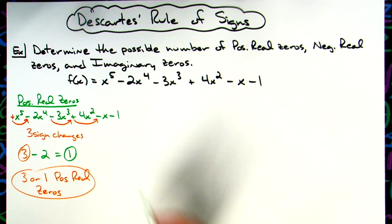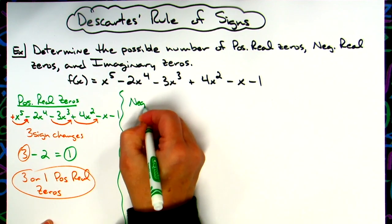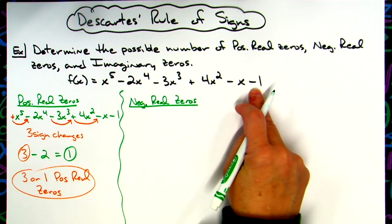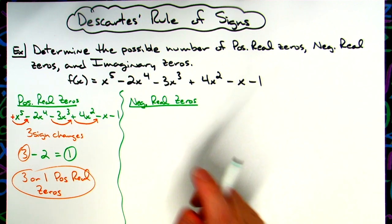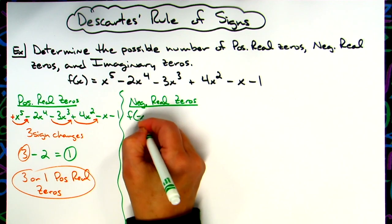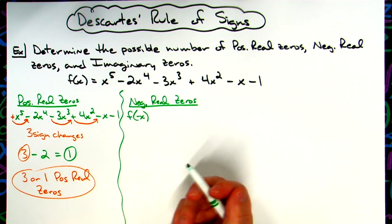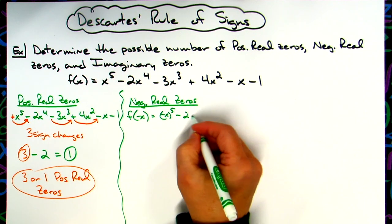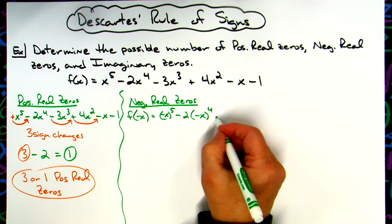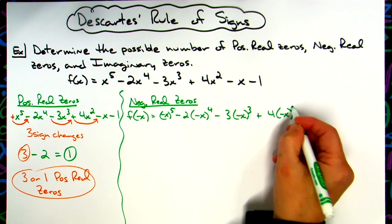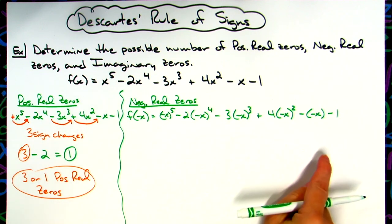Now we're going to write down that original function and plug in negative x. You did this when you tested for symmetry and for even and odd functions. You should be to the place where plugging negative x into the function is something that you can do. So I'm going to take negative x to the fifth power, minus two times negative x to the fourth power, minus three times negative x to the third power, plus four times negative x, minus negative x, and then minus one.